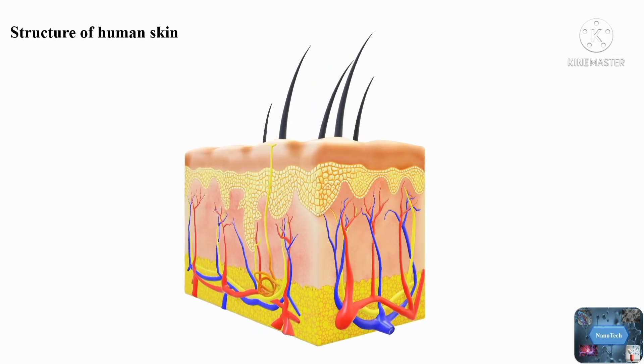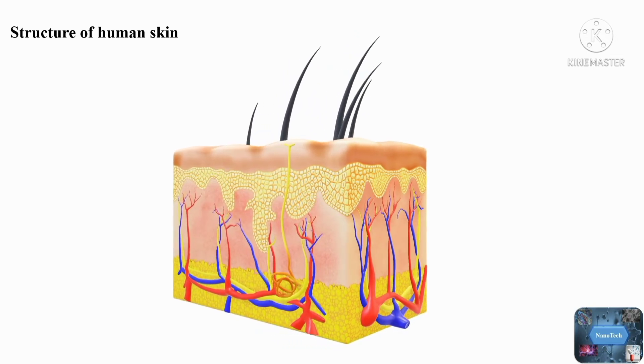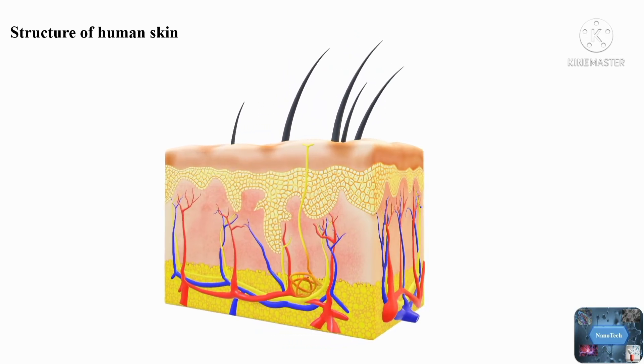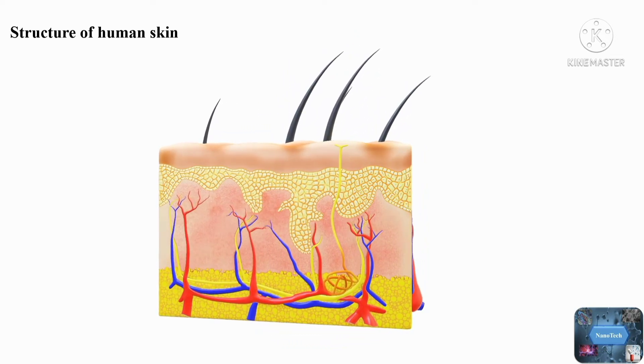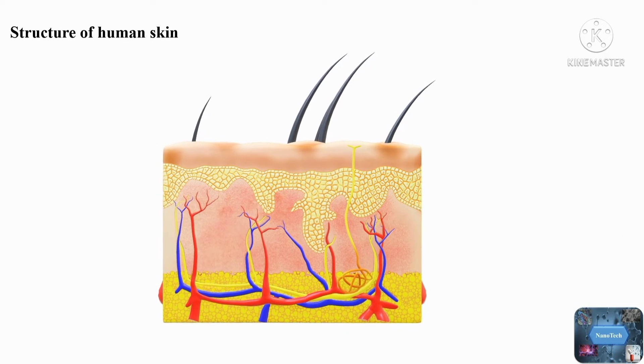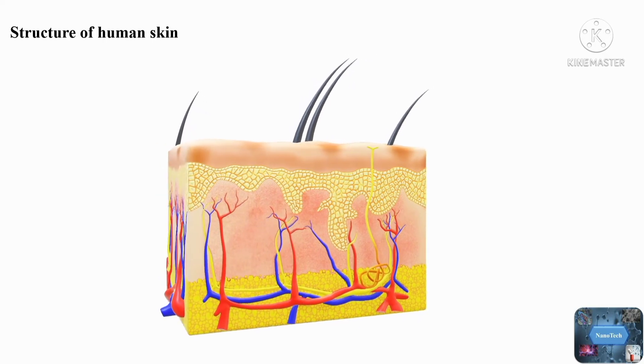The epidermis is made up of keratinocytes, melanocytes, Langerhans, and Merkel cells, which aid in body temperature regulation.